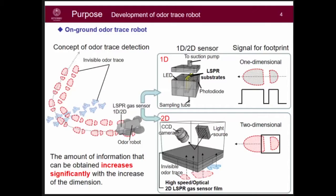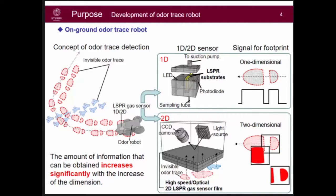Here is the concept of our research: an odor trace robot that uses the shape of the odor trace. With a one-dimensional sensor, the signal is not easy to understand and it is hard to know the shape. With a two-dimensional sensor, we can get the shape directly.